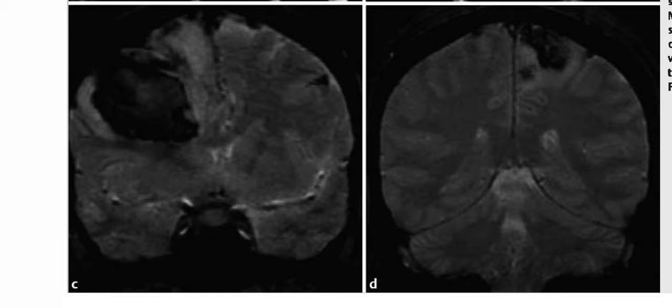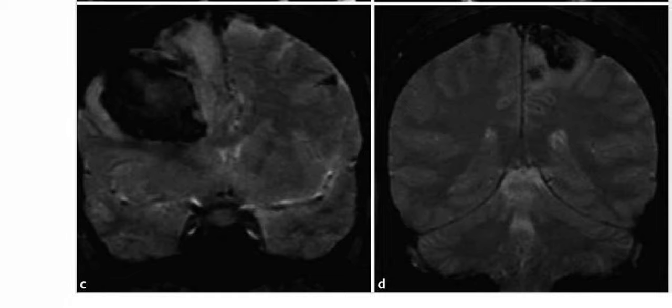MR venography revealed absence of normal flow signal within the superior sagittal sinus. The key imaging finding is intraparenchymal hemorrhage. The top differential is hemorrhagic venous infarct. Other differentials include vascular malformation, contusions, cerebral amyloid disease, and hemorrhagic tumors such as GBM. This is a confirmed case of hemorrhagic venous infarct.